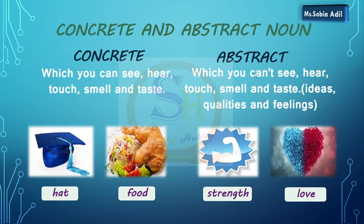Abstract noun — which you cannot see, hear, touch, smell and taste. It can be an idea, a quality or a feeling. For example, love, sadness, happiness, strength — so it includes qualities and feelings. Concrete nouns can be touched, smelled and heard. But abstract nouns cannot be touched, cannot be smelled and cannot be tasted.